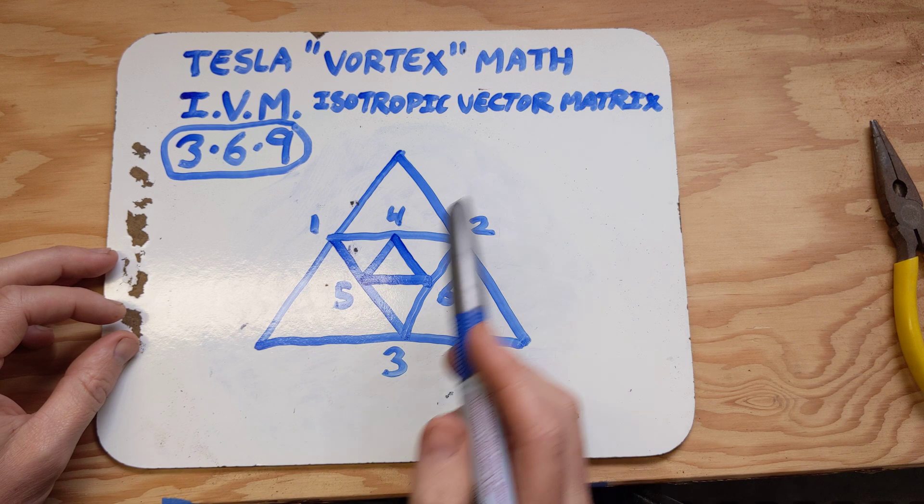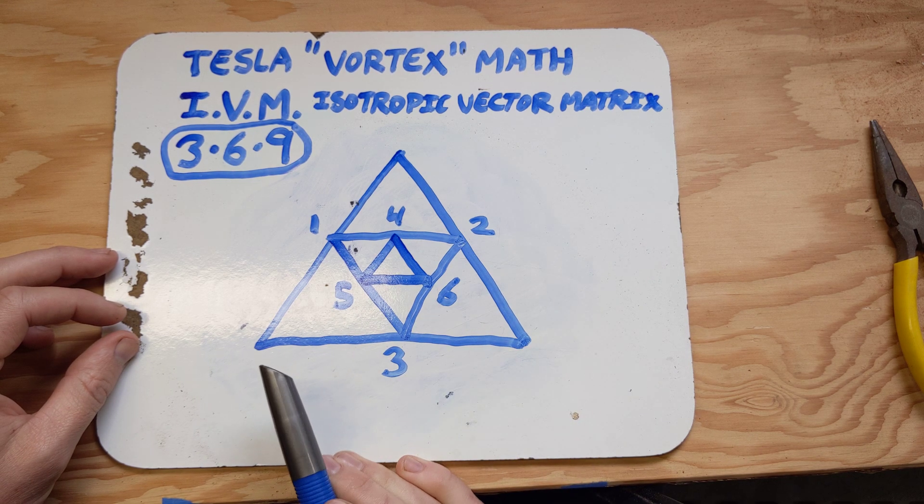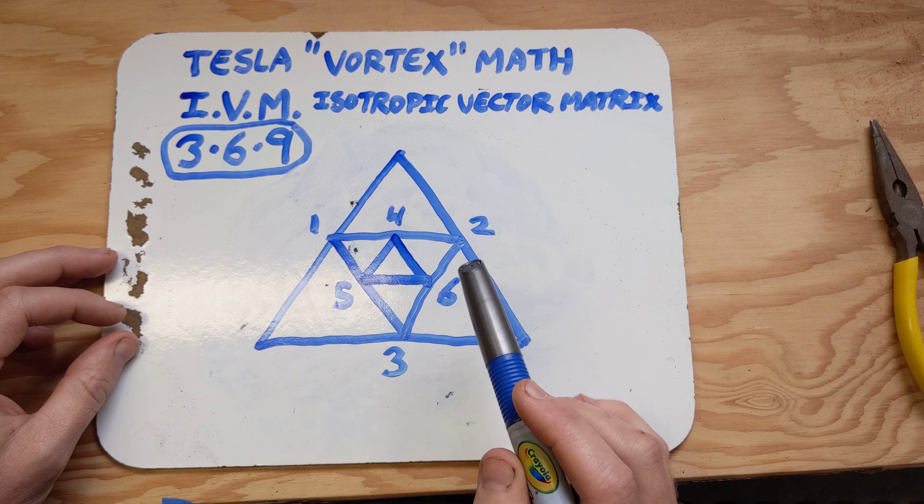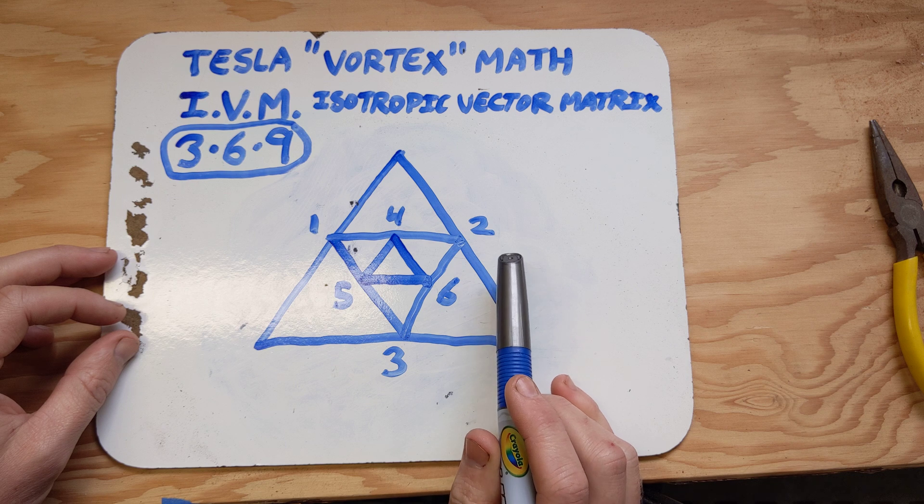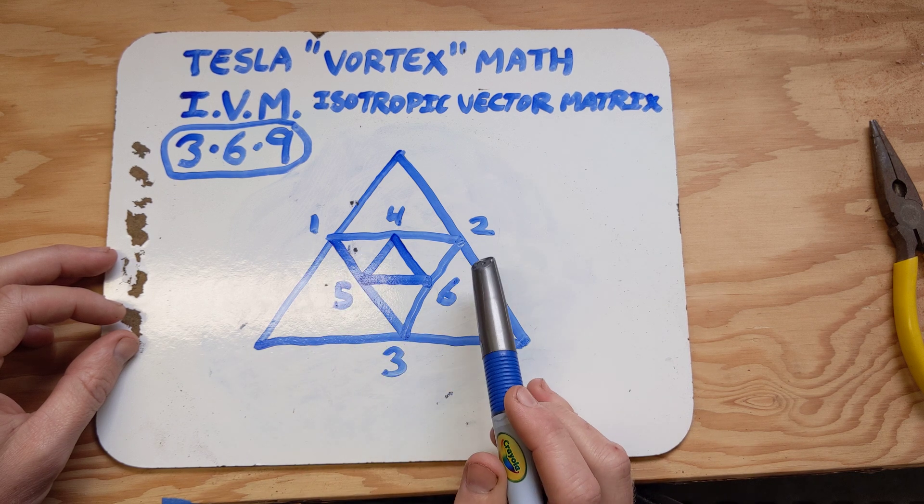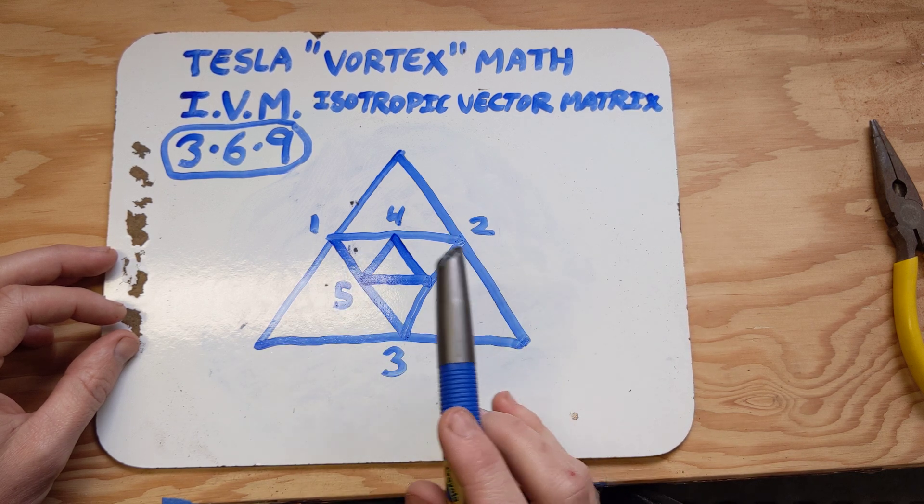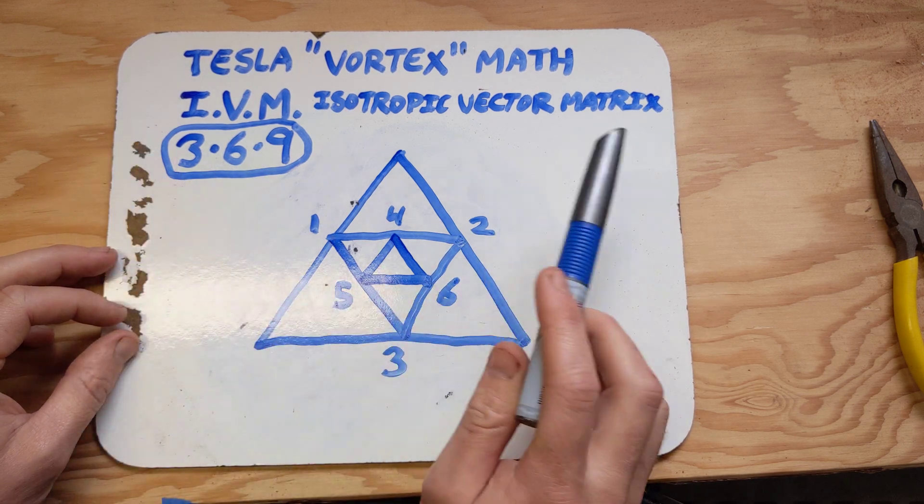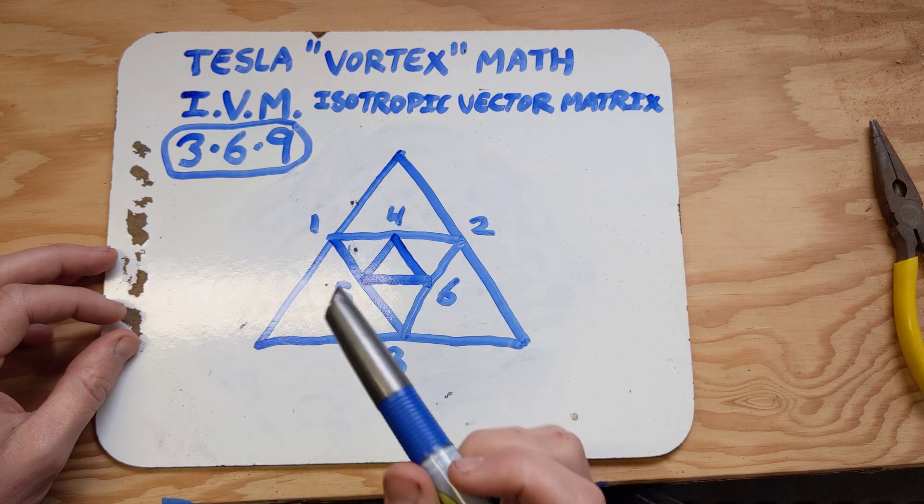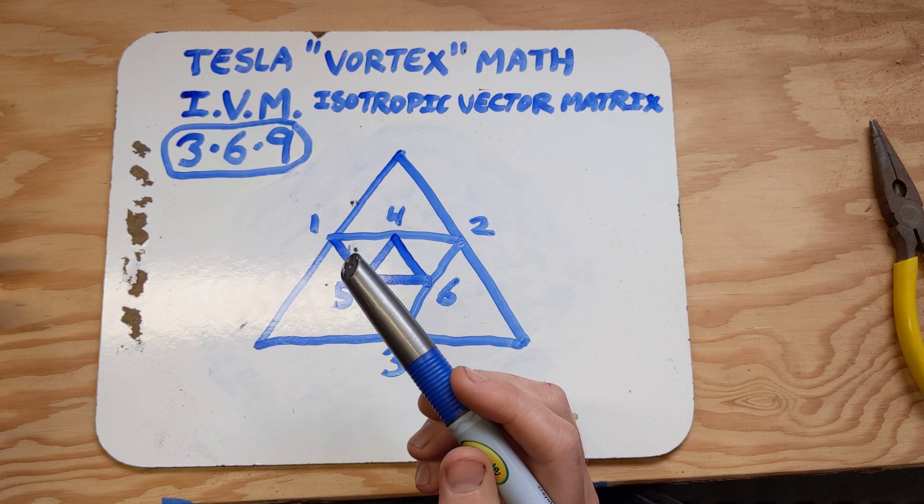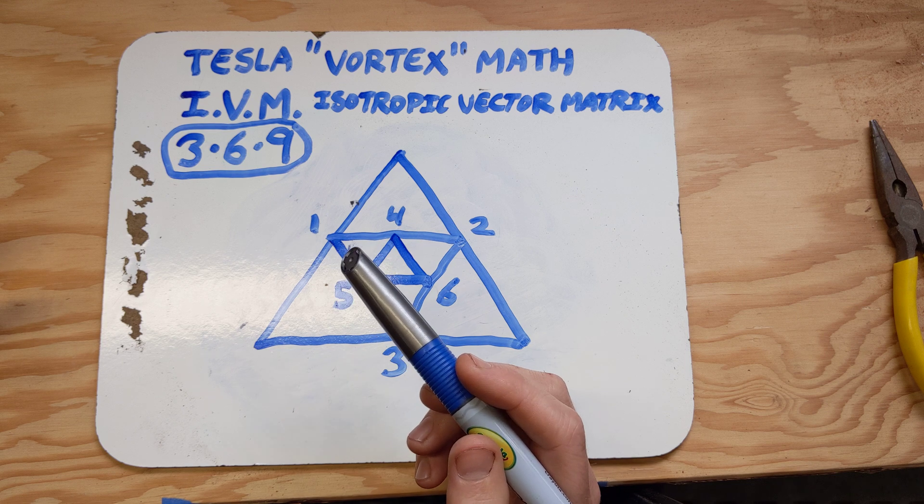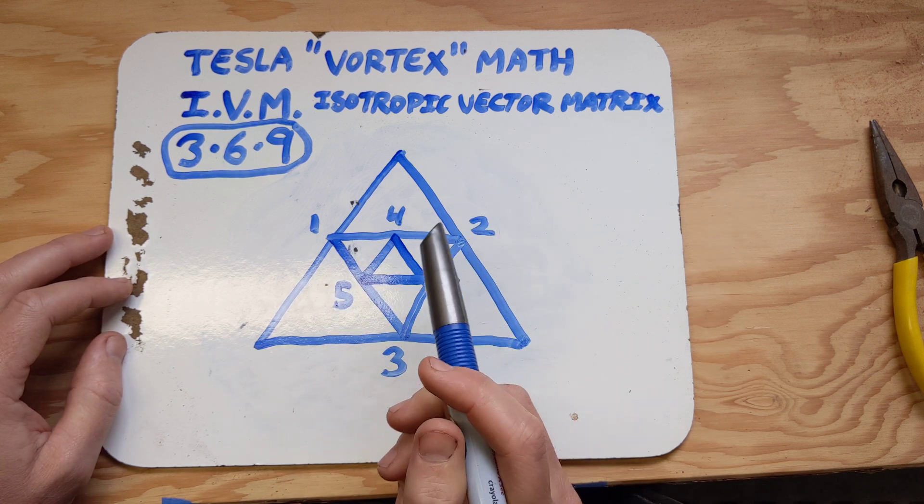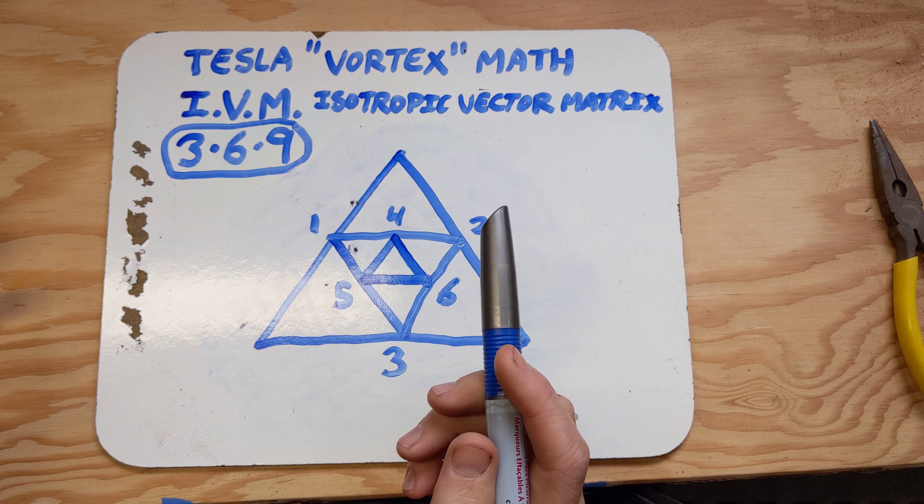And that fundamentally could be what everything that we know of in the universe consists of. So yeah, 369, right? It's just a numerical representation of the interleaving overlapping supersymmetry of equilateral triangles, which is fundamentally the isotropic vector matrix, which is in turn the substance of the universe and gravity.